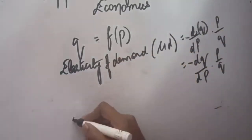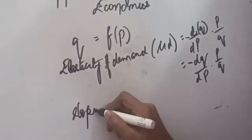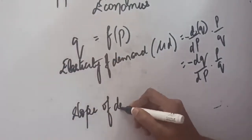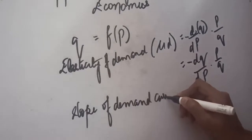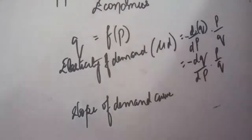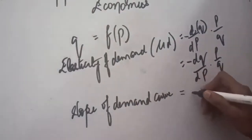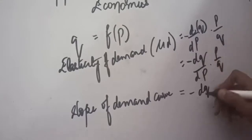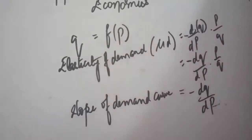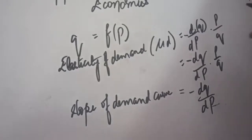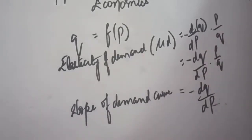Next is the slope of the demand curve. In some questions you may be asked to calculate the slope of the demand curve. The slope of the demand curve equals dq/dp (with a negative sign), so this portion of the elasticity of demand formula can be used to calculate the slope of the demand curve.